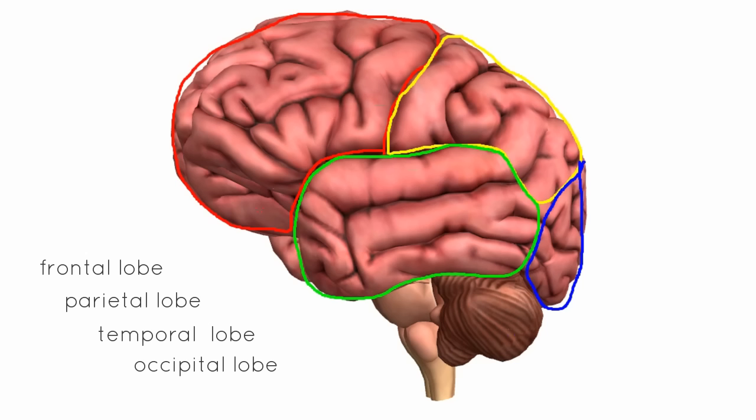The frontal lobe is important in decision-making, problem solving, and planning. The temporal lobe is important in memory, language, emotion, and hearing. The parietal lobe acts as an integrator of sensory information — it receives and processes sensory information. And the occipital lobe, sitting at the back, is responsible for vision. That's a very crude overview of their functions, but it gives you an idea that different lobes have different functions.